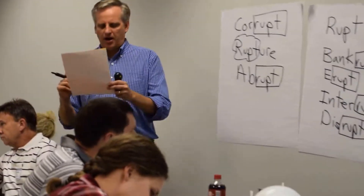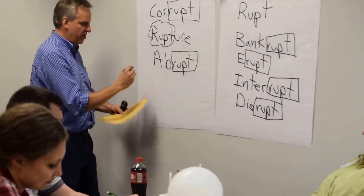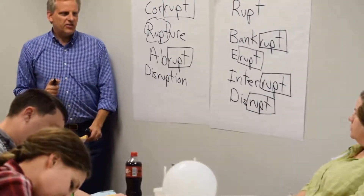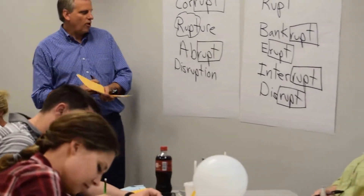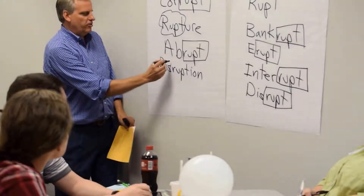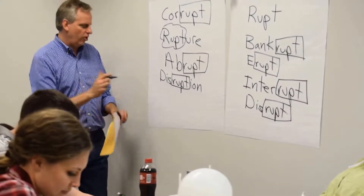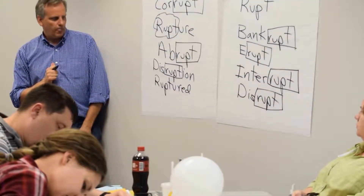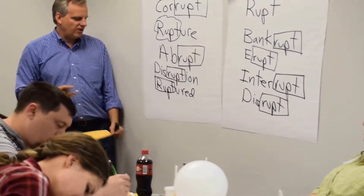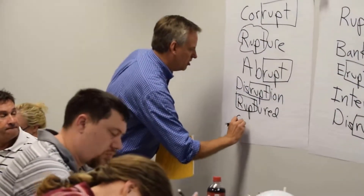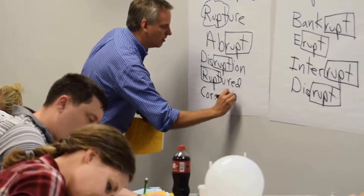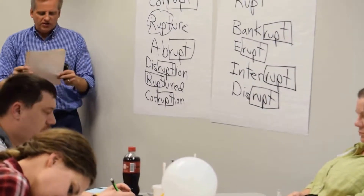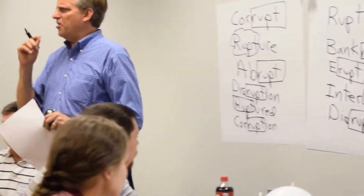I'm going to put up another word and ask you to show me where our root is. We've got 'disruption' — where do we see our root word in this word? In the middle — our 'rupt' is there. If we have 'ruptured' — R-U-P-T-U-R-E-D — where do we see our root? At the beginning — in this case we've added a suffix. And if we have 'corruption,' where do we see our root? In the middle. So we've got several examples. Any other examples you can think of where we see that root in there?